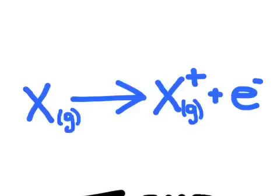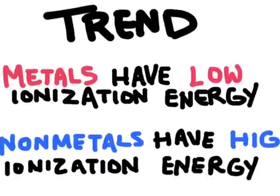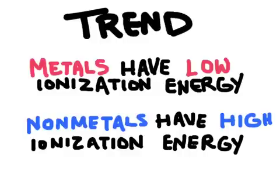A low ionization energy means it's easy to remove an electron, and a high ionization energy means it's difficult to remove the electron. The basic trend is this: metals have a low ionization energy, whereas non-metals have a high ionization energy.